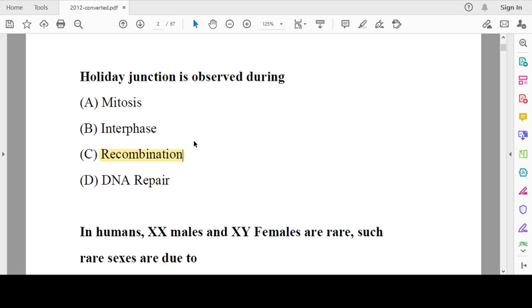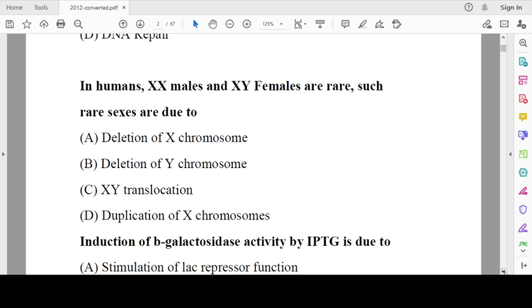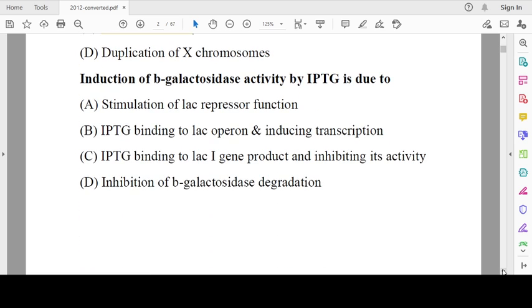In humans, XX males and XY females are rare. Such rare sexes are due to XY translocation. Induction of beta-galactosidase activity by IPTG is due to: IPTG will bind to lac I gene product, which is a repressor, and inhibit the repressor activity. As a result, the lac operon will get activated.